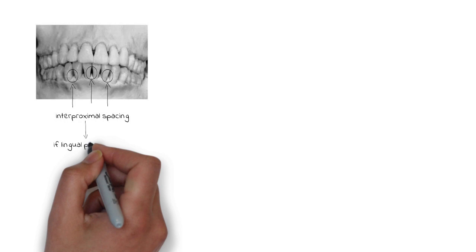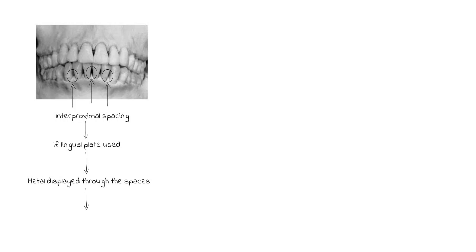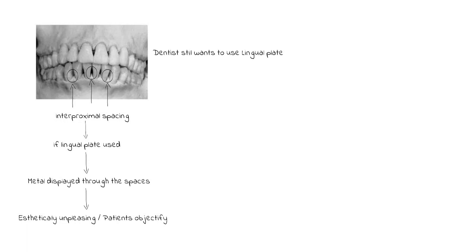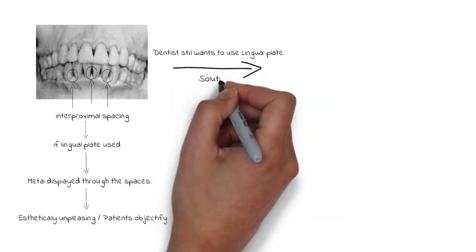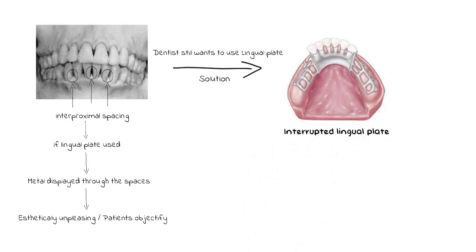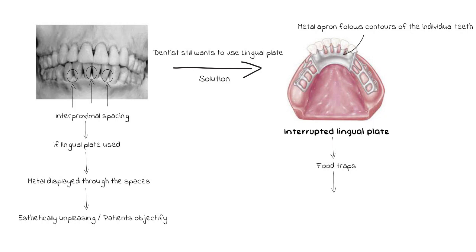Interproximal spacing can result in metal being displayed through the teeth, which patients often find aesthetically unpleasing. If the lingual plate must be used despite this, an interrupted lingual plate can be used, where the metal apron follows the contours of individual teeth without being excessively displayed through interproximal spaces. However, food trapping is a major drawback, and special instructions should be provided to the patient.